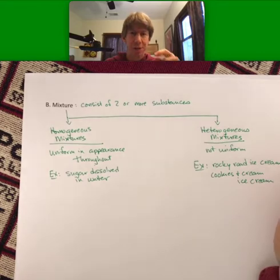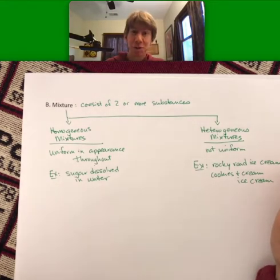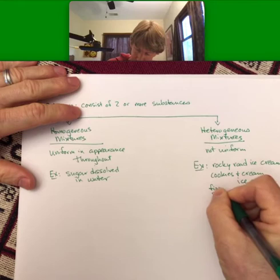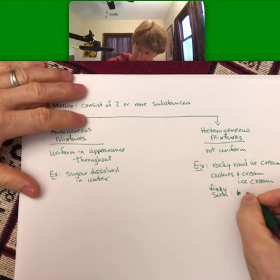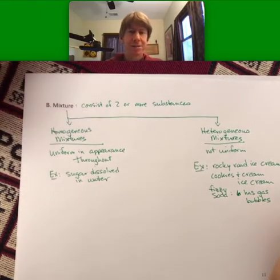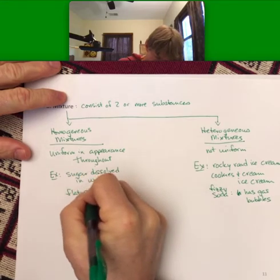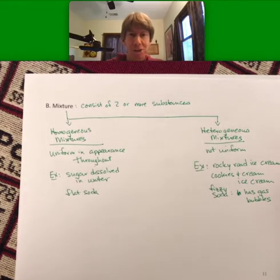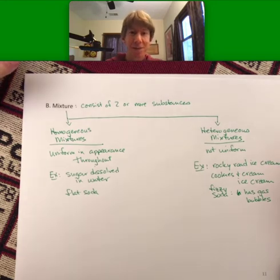Another example is going to be soda, or fizzy soda. Fizzy soda has the liquid and it has gas bubbles. Because once all the gas bubbles go away and it's not fizzy anymore, flat soda actually is a homogeneous mixture. We're mostly interested in homogeneous mixtures for general chemistry and most of chemistry because they're simple. They're uniform.